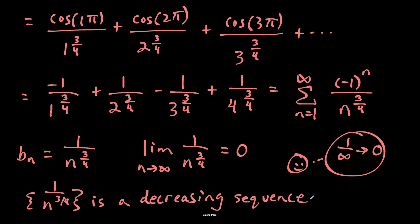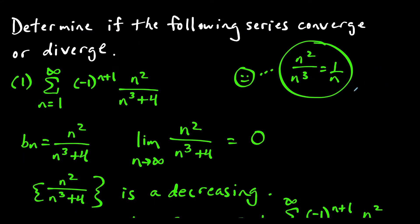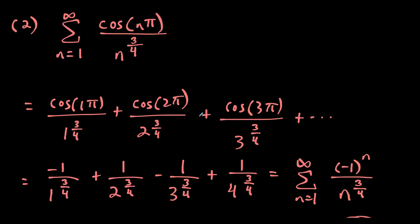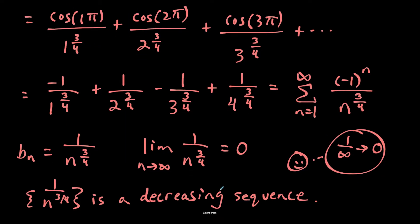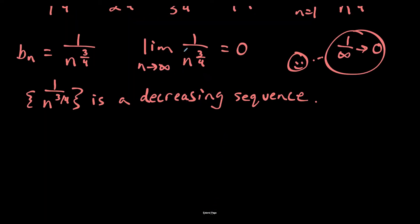An important skill: when identifying b sub n, it's everything except the negative one to the n or negative one to the n plus one — that's a really big idea for these questions. Since we found the limit of b sub n to be zero and we have a decreasing sequence, by the alternating series test the original series converges.